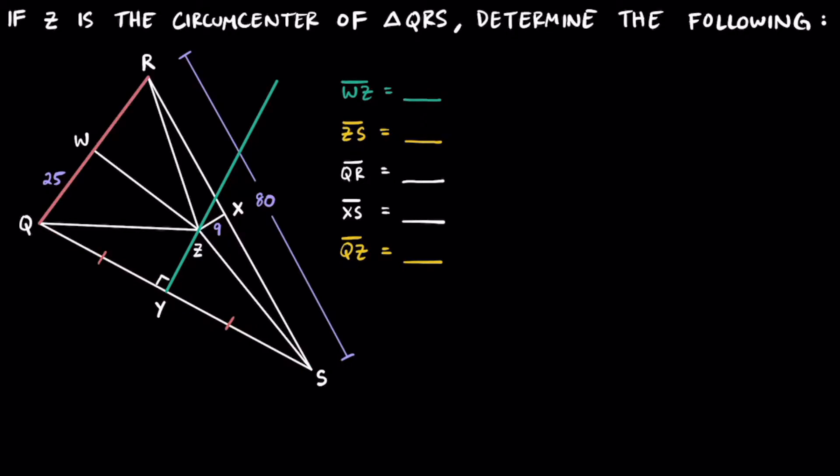For segment QR, we can do the same thing and draw another perpendicular bisector that creates equivalent segments of WR and WQ and creates more right triangles.